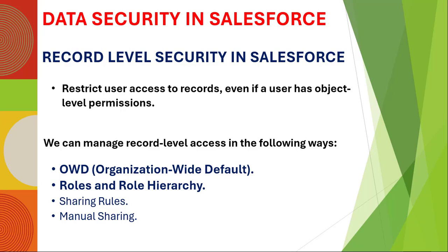In record level security, it restricts the user's access to records even if the user has object level permissions. We can manage record level security in the following ways: OWD (Organization-Wide Default), then role and role hierarchy, then sharing rules, and then manual sharing.